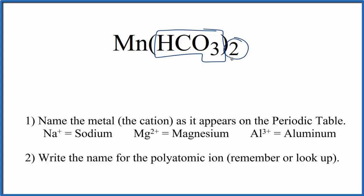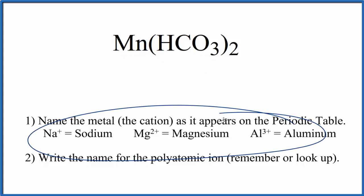We have two of those. So since we have the metal and the polyatomic ion, we'll use these rules here to write the name for Mn(HCO₃)₂. First, we write the name of the metal as it appears on the periodic table. Mn, that's manganese.